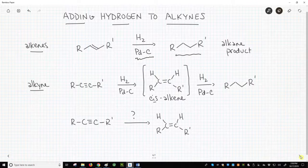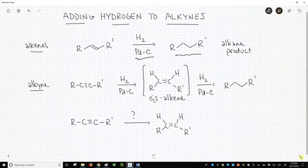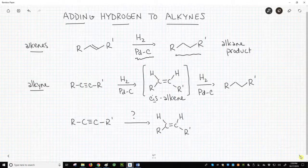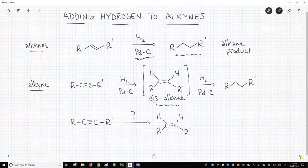How about alkynes? If we treat an alkyne with H2 and palladium on carbon, we get an addition. It's a syn addition, and the resulting alkene is therefore a cis alkene, or Z alkene if you prefer.